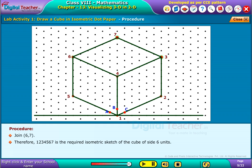Therefore, 1, 2, 3, 4, 5, 6, 7 is the required isometric sketch of the cube of side 6 units.